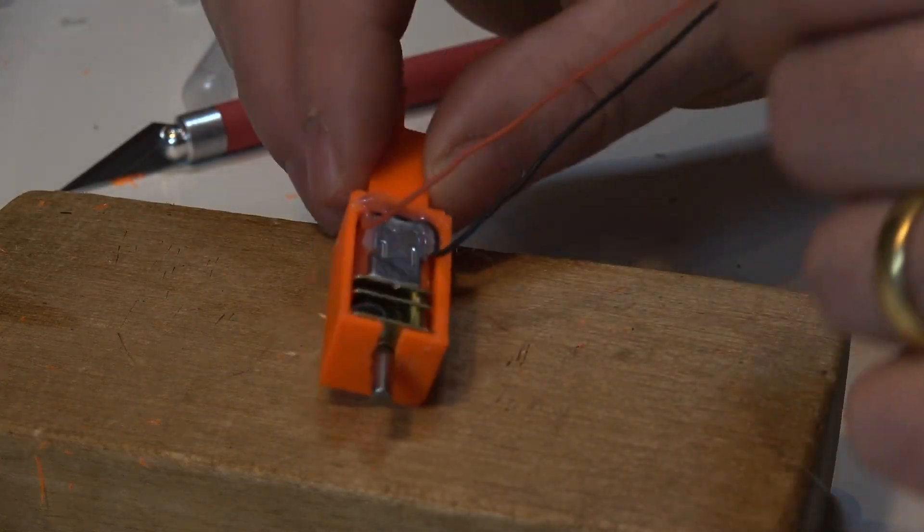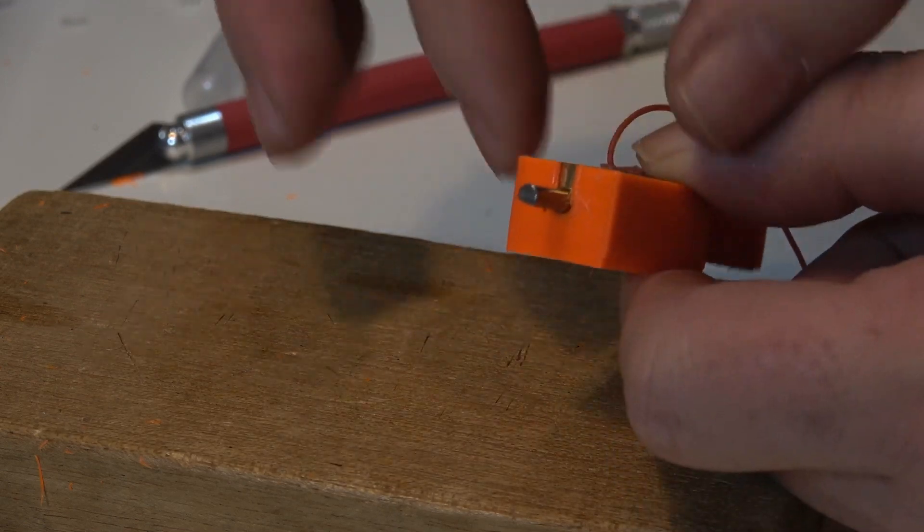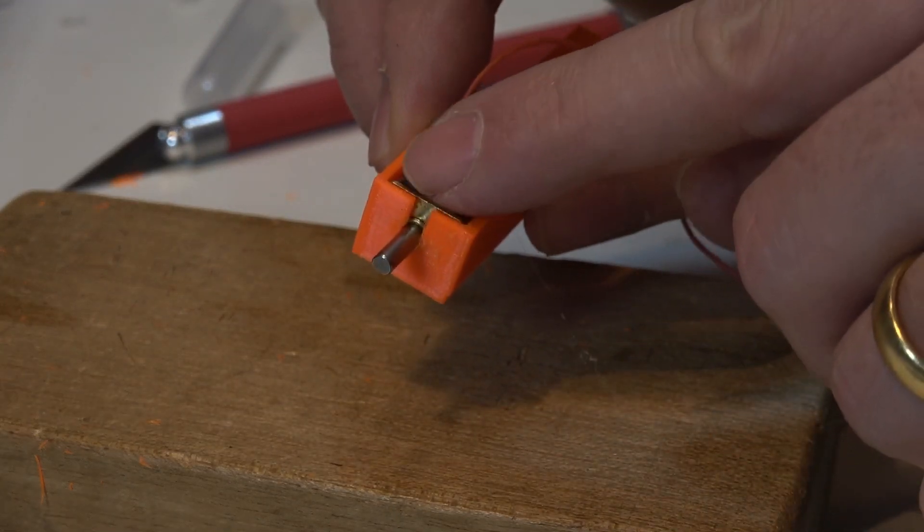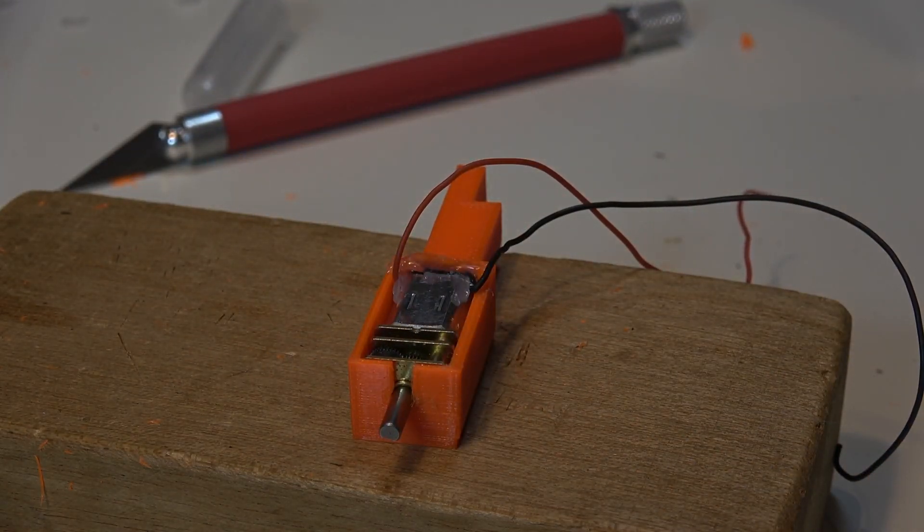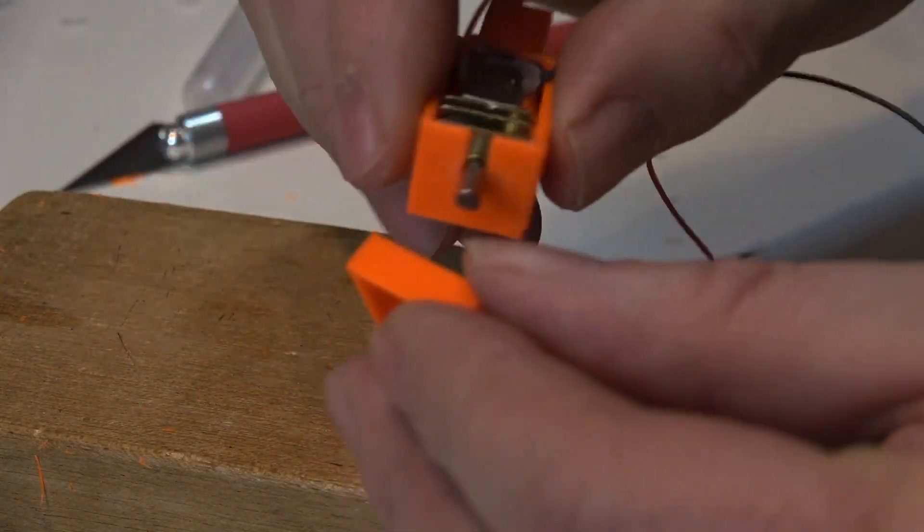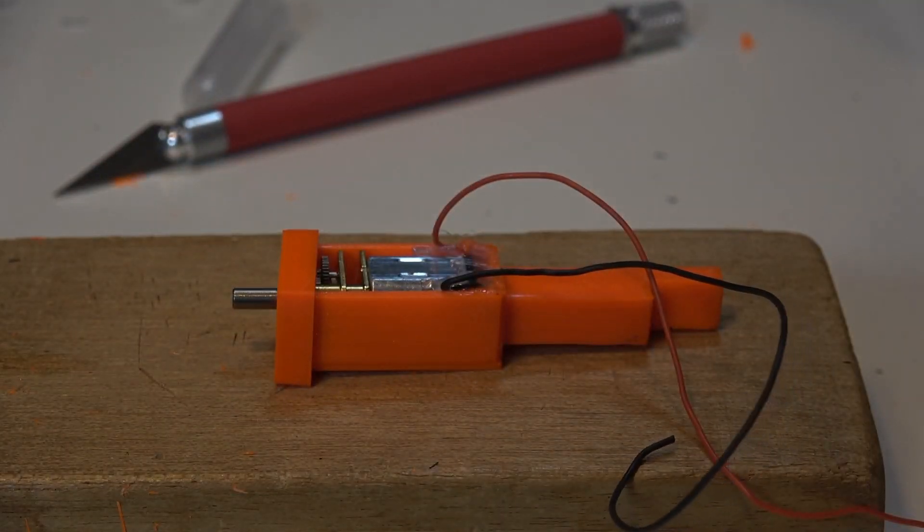And that's almost ready to go in. Just before we do, I'm going to put the retaining collar 3D printed part around the front here. That stops the motor from ever wanting to come out—not that I think it's likely, but it's a belt and braces thing. So that's these parts, and that should just easily push on.